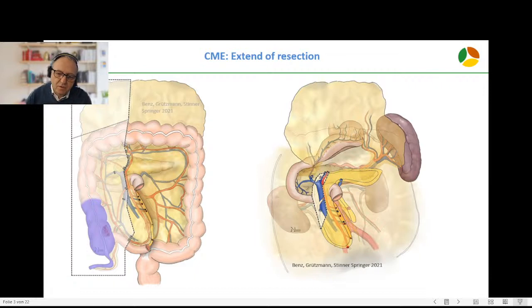If you have a closer look on the central aspect of the lymphadenectomy, the anterior surface of the SMB is cleaned and we also try to remove the D3 lymph nodes along the middle colic artery, however leaving the left branch.